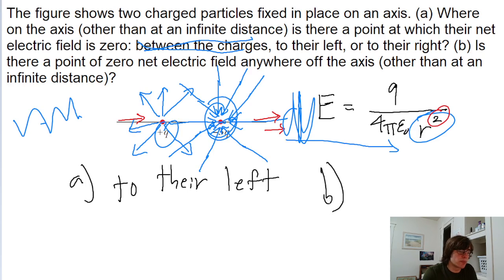Now let's consider part B of the problem, which asks if there's any point where the net field is zero off the axis. Well, remember, we only have two particles we're working with here. And the only way for us to have two particles and to have a net field of zero is, as mentioned earlier, for their field lines to be pointed in perfectly opposite directions so that they're canceling each other out perfectly.